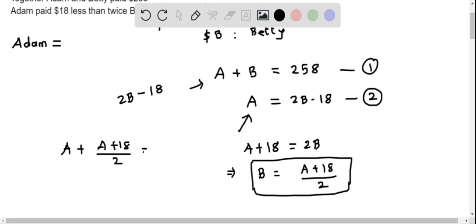We have to remove this fraction, so I'll multiply all terms on both sides by 2. This becomes 2A, and here the 2 will cancel with the denominator, so you get A + 18. This equals twice 258, which is 516.